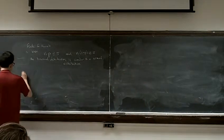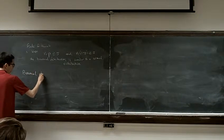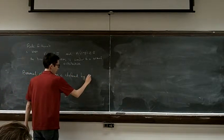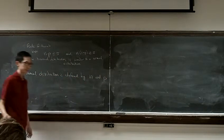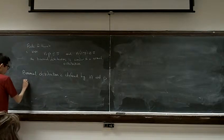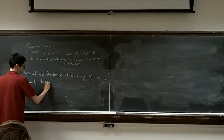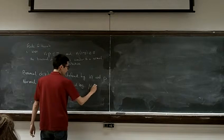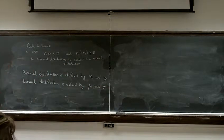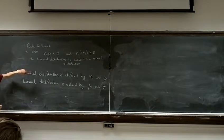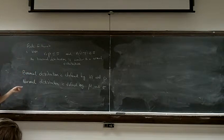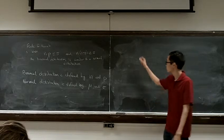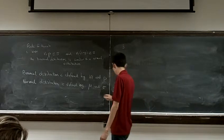So a binomial distribution is defined by n and p. A normal distribution is defined by mu and sigma. So if you're given a binomial distribution and you want to approximate it using a normal distribution, we can. So for example, why would we even want to do this?